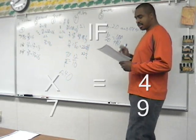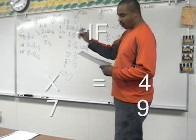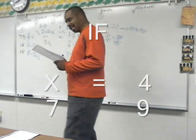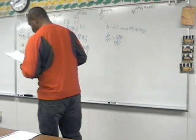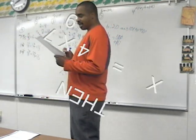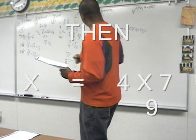Number four: if x to 7 equals 4 to 9, then x equals 4 times 7 divided by 9.